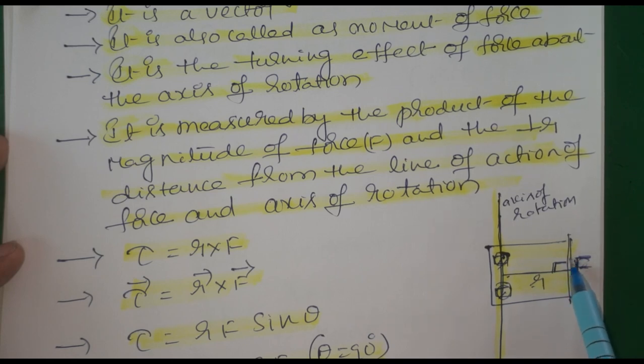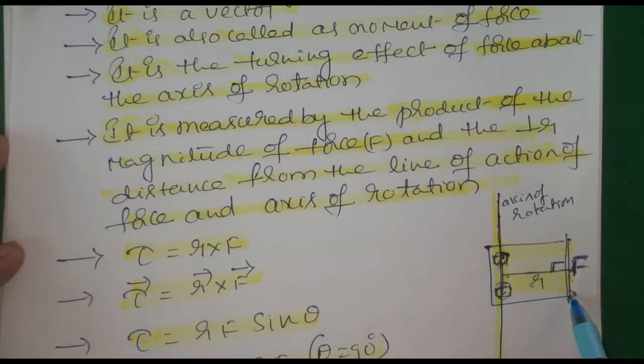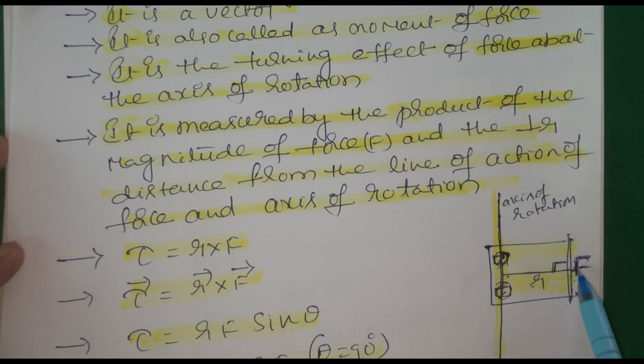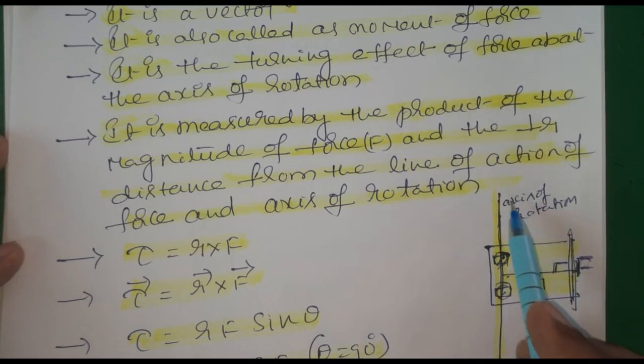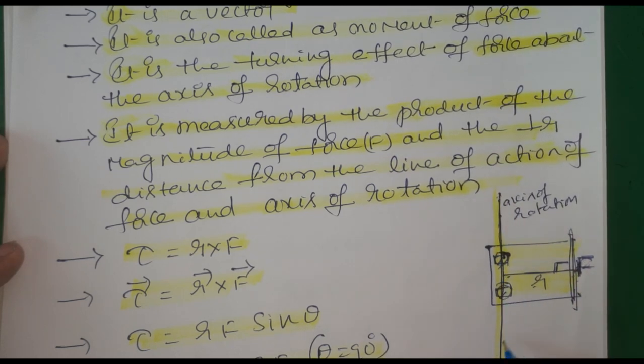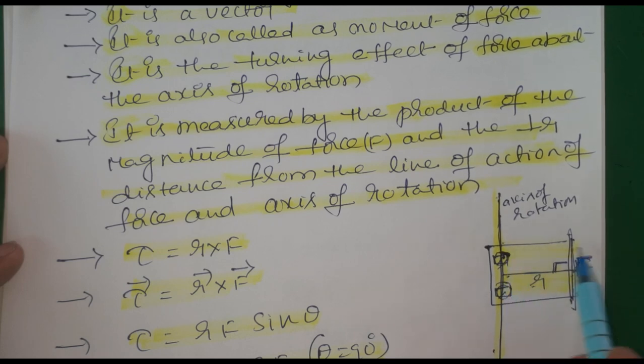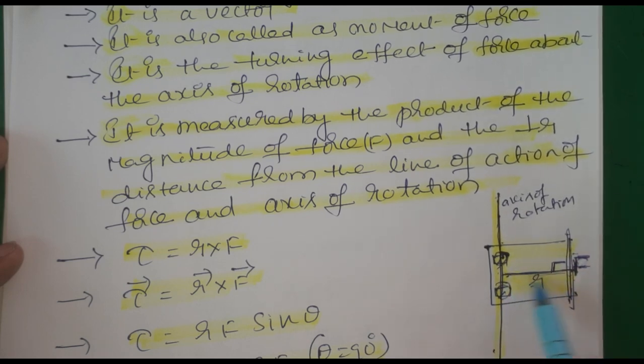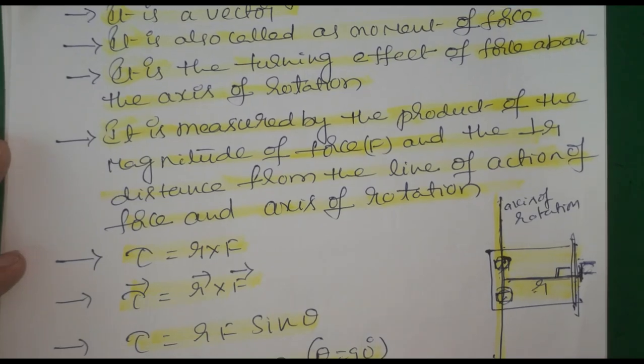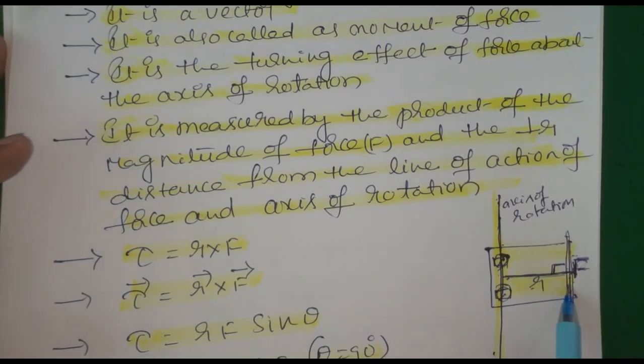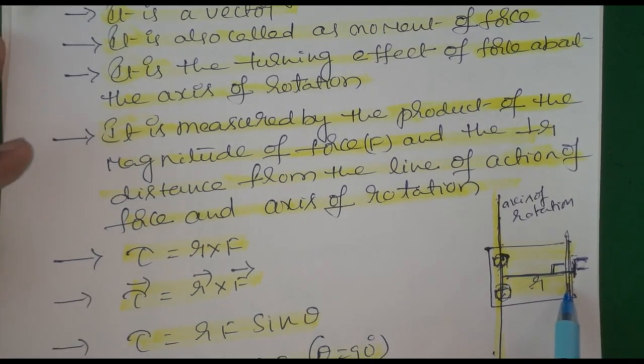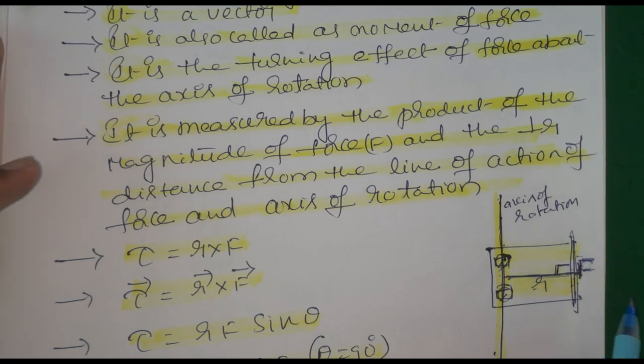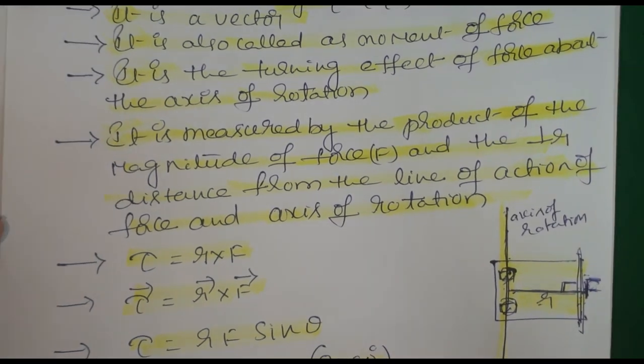Whether we open or close the door, we apply force in that direction. Then easily the door will open or close. This is the line of action of force, this is the axis of rotation through the screw and hinge. This is fixed, this is free. The distance between these two is called perpendicular distance. When we apply force, this rotates. The turning effect produced is called torque or moment of force.